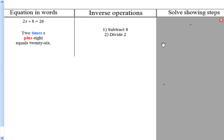So here are our inverse operations. The opposite of plus 8 is the first thing we do, subtract 8. And then the opposite of multiplying by 2 is dividing by 2, so we do that second.